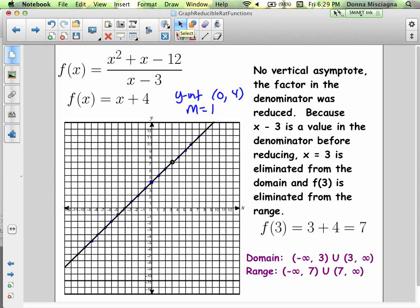So there we go. There's our graph. So there's no vertical asymptote. The factor in the denominator was reduced, but because x minus 3 is a value in the denominator before reducing, x equals 3 is eliminated from the domain, and f of 3 is eliminated from the range. Because if x can't be 3, then y can't be 7. Because the only way that x plus 4 ever equals 7 is if x is 3, but x can't equal 3. So that means our domain is we're going to take out the hole, and our range we're going to take out the y-coordinate of the hole. So our domain is negative infinity to 3, 3 to infinity. Range is negative infinity to 7, 7 to infinity. The function just literally jumps over that point.